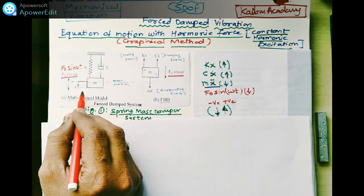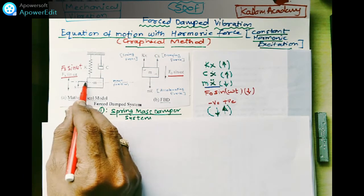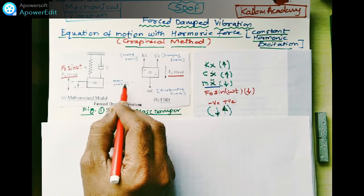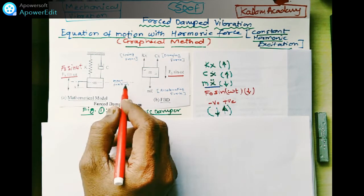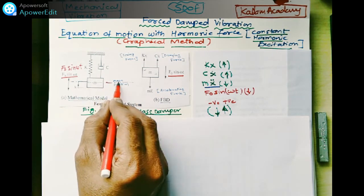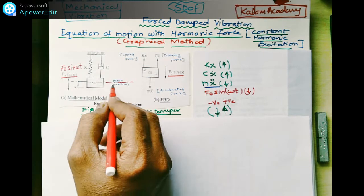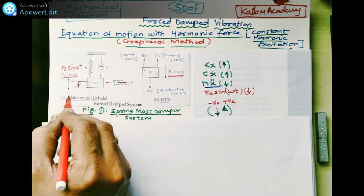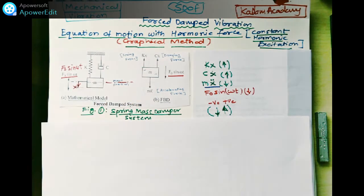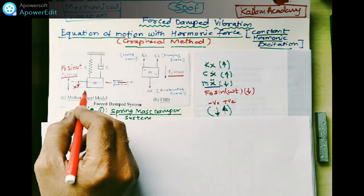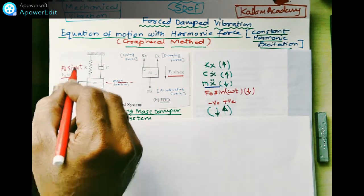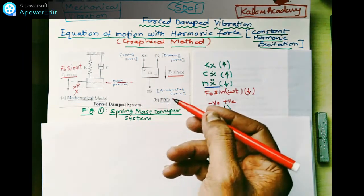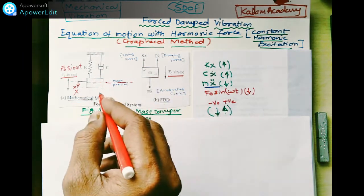With the displacement x, here is the displacement. This line shows the mean position, and when it displaces with a distance of x, there will be a disturbance force.